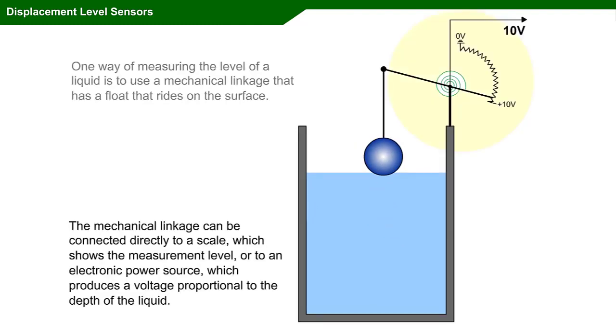The mechanical linkage can be connected to a scale which shows the measurement level, or to an electronic power source which produces a voltage proportional to the depth of the liquid.